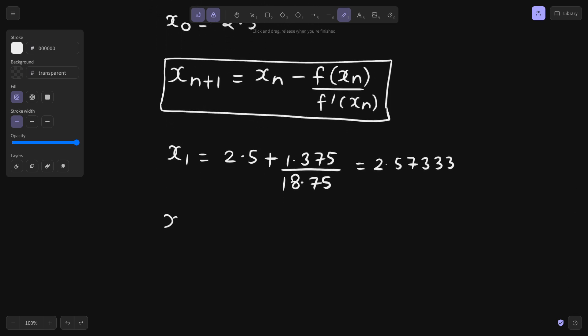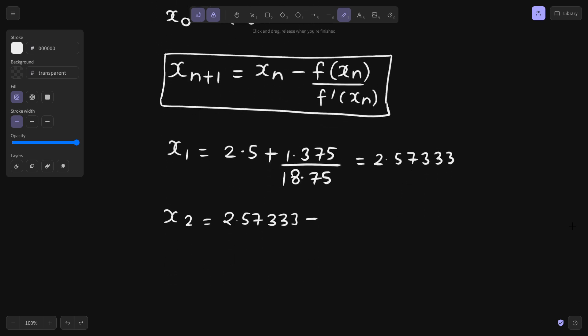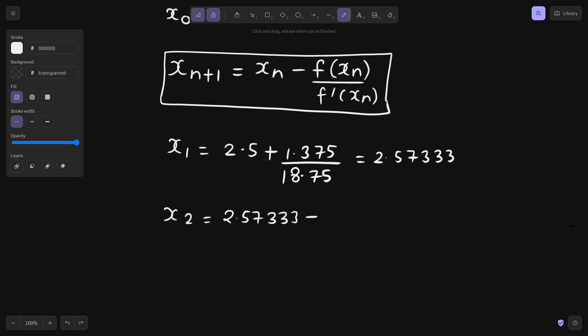Let's find the x 2 value. That will be 2.573333 minus. Function is x cube minus 17. So this will be 2.57333 cube. This is going to give us 0.04066. I am only writing till 5 decimal places. And 3x square was the value of the derivative. So again 2.57333 square. So this will give us 19.86608.